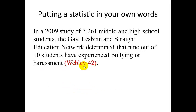If I'm writing about statistics, as an alternative to spelling out the whole quotation word for word, I could simply take those same statistics and reformulate them in my own words: 'In a 2009 study of 7,261 middle and high school students, the Gay, Lesbian, and Straight Education Network determined that 9 out of 10 students have experienced bullying or harassment.' That's not a direct quote from Time Magazine — it's my own words. But since I used information from the source, I want to make sure that I cite it the same way. Notice the citation is exactly the same, with the period on the outside of the in-text citation.